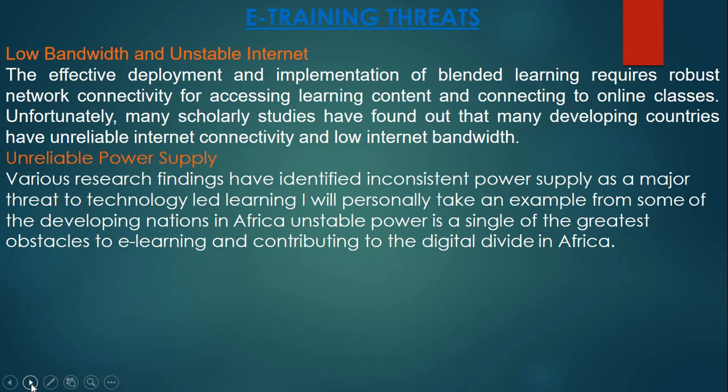Now we come to e-training threats, completing the SWOT analysis. The first threat is low bandwidth and unstable internet. The effective deployment and implementation of blended learning requires a robust network. For following online courses, you need a very strong internet connection — that is a very big problem for accessing learning content and connecting to online classes. Unfortunately, many scholarly studies have found that many developing countries have unreliable internet connectivity and low internet bandwidth, which is a major threat to e-training.